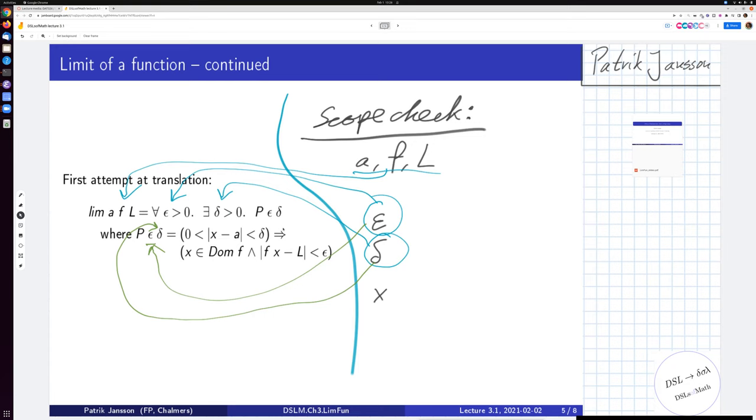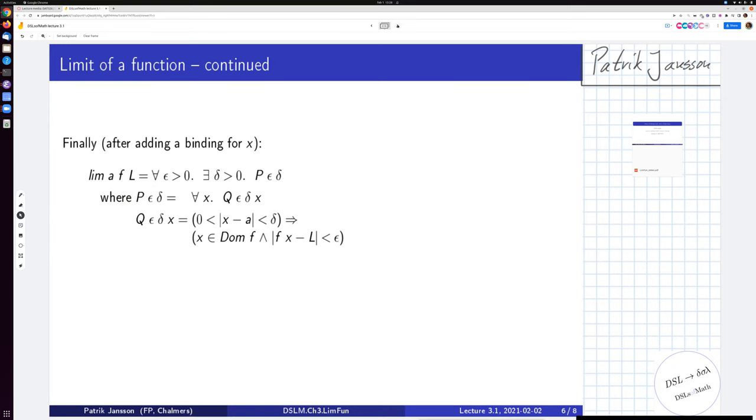So there is actually a hidden for all somewhere here. So this definition, the first attempt at translation, does not work. I mean, we really need to insert another parameter somewhere. And the way we solve it is by adding a for all.